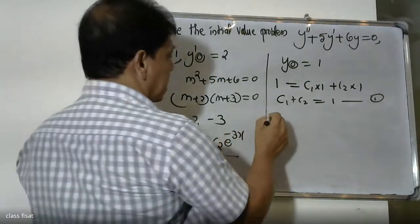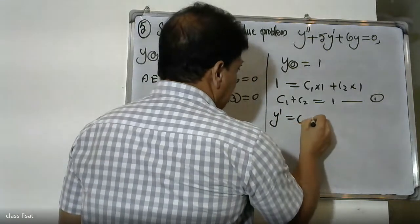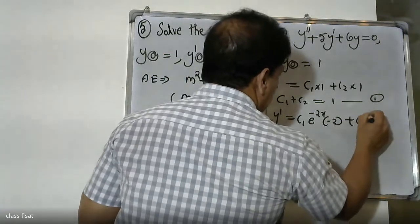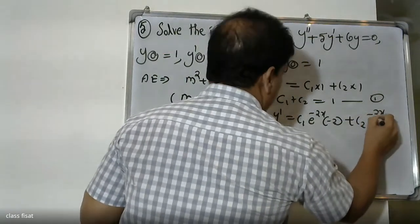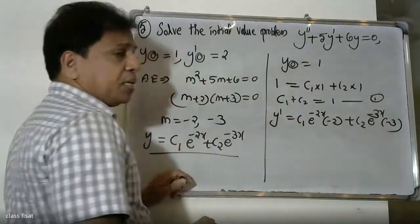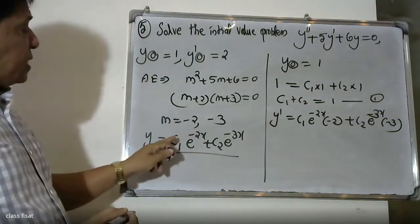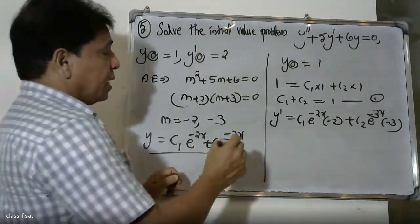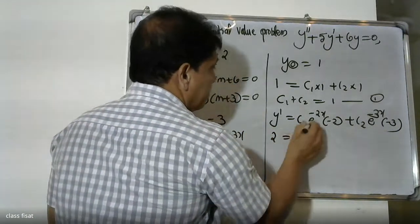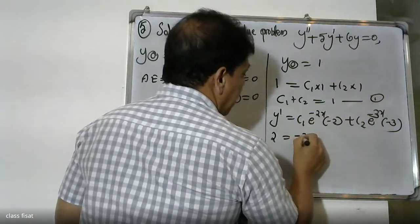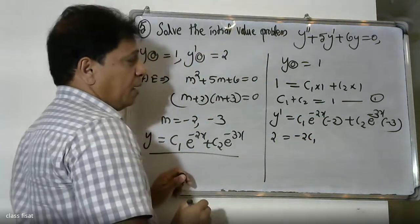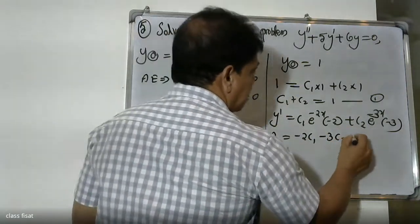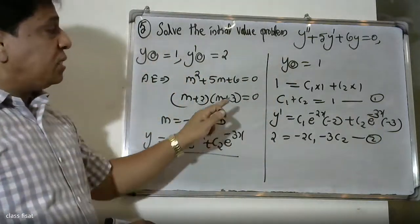Differentiating the general solution: y dash equals c1 into e raised to minus two x times minus two plus c2 into e raised to minus three x times minus three. Applying y dash(0) equals zero gives minus two c1 minus three c2 equals zero.